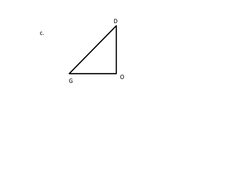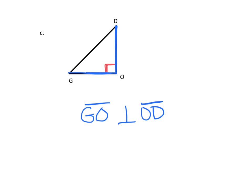Our last example is a triangle. We're supposed to identify any perpendicular lines we see. What I like to do is look for the 90 degree angles. This is definitely not a 90 degree angle, neither is this, but this is. So let's mark it. There's our 90 degree angle, which means we have two line segments that are perpendicular. That's going to be GO, which is perpendicular to OD — or DO, it doesn't matter. Then we write the perpendicular symbol. Remember, teachers, that these mean line segments — we're not drawing the little arrows, because these line segments are not going on forever.